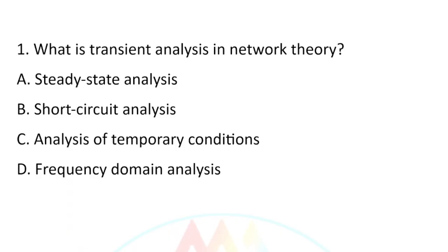Question number one: What is transient analysis in network theory? Option A, district analysis. Option B, short circuit analysis. Option C, analysis of temporary condition. Option D, frequency domain analysis. Transient analysis mainly deals with temporary condition or temporary changes. So the correct answer is option C.